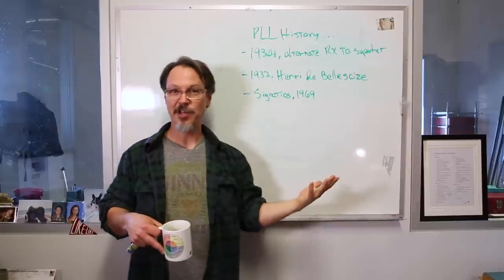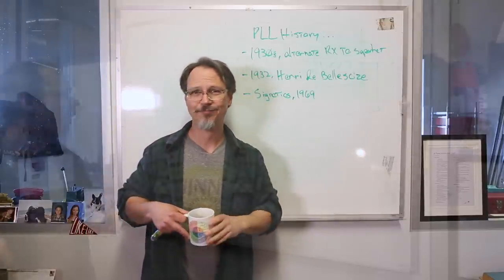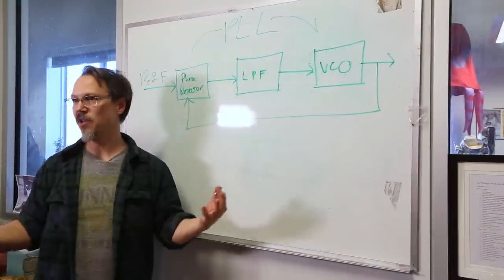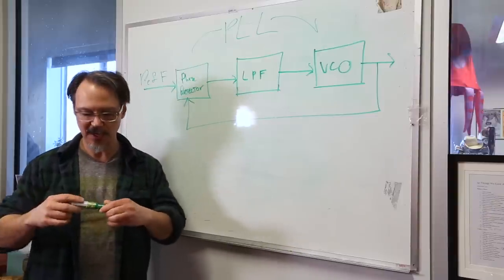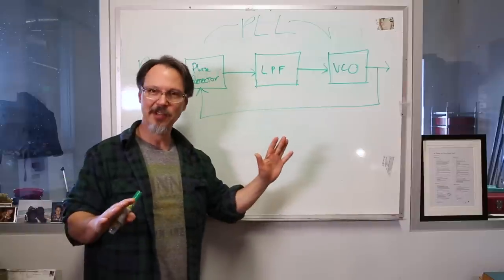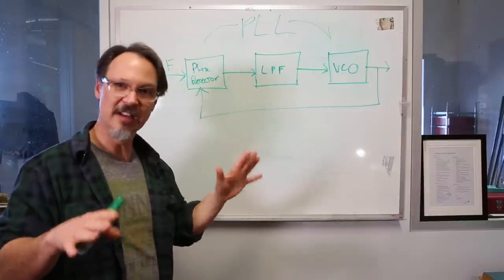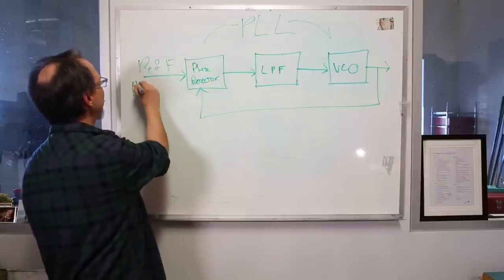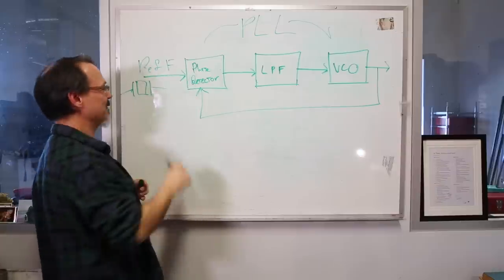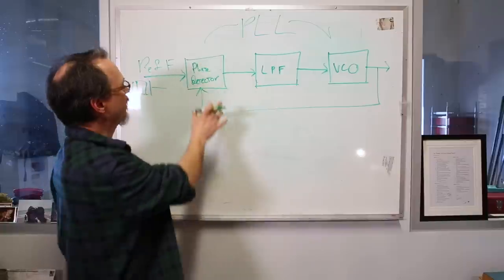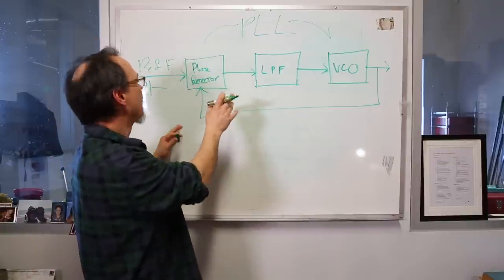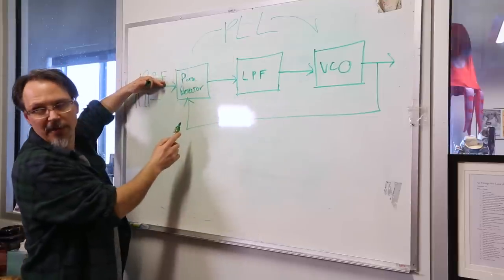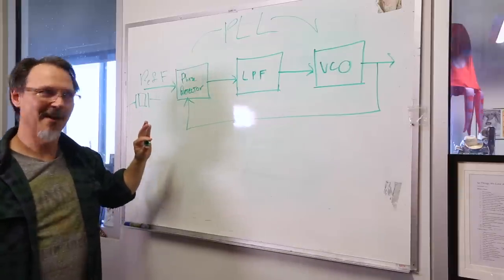Now let's talk about what the topology actually looks like and some of the design philosophies behind it. This is the overarching idea behind what a phase-lock loop is — the circuit topology in block diagram form. Going into this, you have a reference frequency, probably from your crystal. Your first stage is a phase detector, and what it is doing is comparing your input frequency to your ultimate output frequency, with a caveat we'll describe as we go.